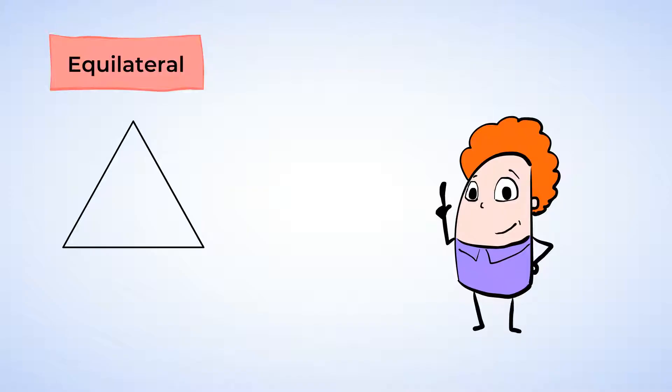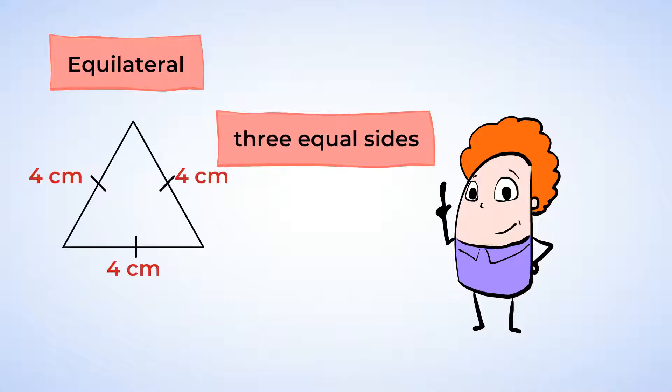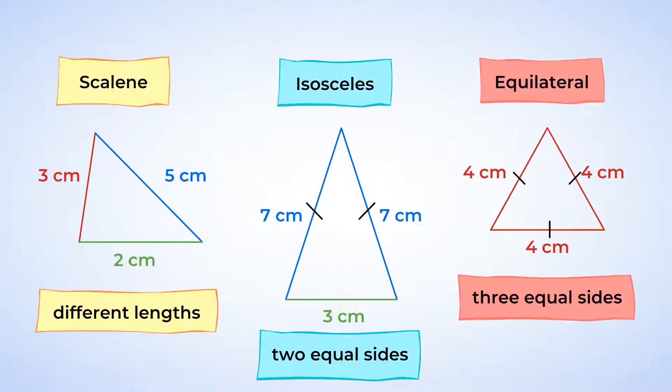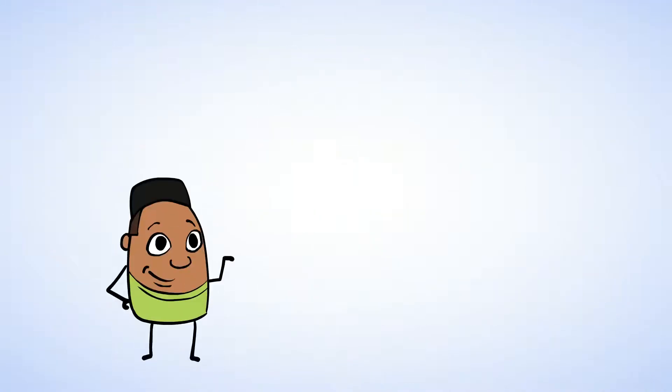And here comes the equilateral triangle. Just like the first part of the name equi suggests, an equilateral triangle has sides with the same equal length. Take a look at the tick marks on all the sides, showing that each side is equal to 4 cm.